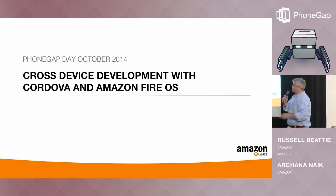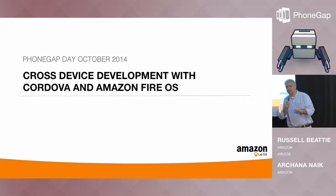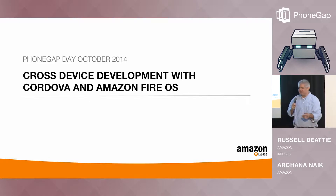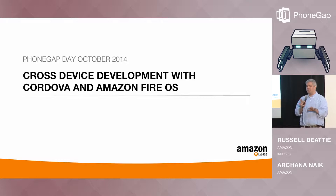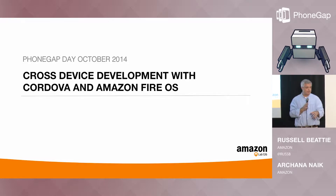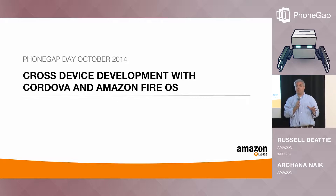Welcome. This is Cross-Device Development with Cordova and Amazon Fire OS. We are from Amazon, specifically Amazon Lab 126 — the team that makes the hardware at Amazon: the Kindle e-readers, Kindle Fire devices, as well as the Kindle Fire TV streaming media player and the Fire phone.